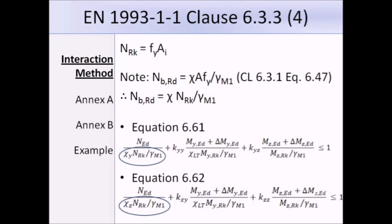You've seen this equation in the previous slide. NRK equals FY times AI, but the design buckling resistance NBRD equals CHI times A times FY over gamma M1, as defined in Clause 6.3.1, equation 6.47. Therefore, if we rearrange, CHI times NRK over gamma M1 equals NBRD. So, the terms circled here in equation 6.61 are equivalent to the design buckling resistance of the member.